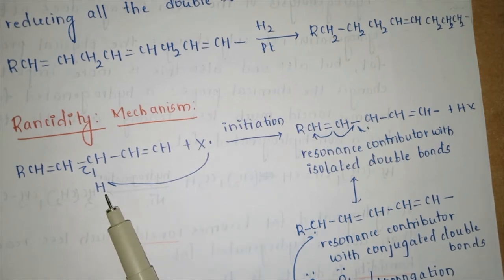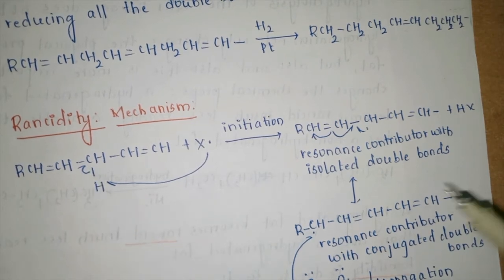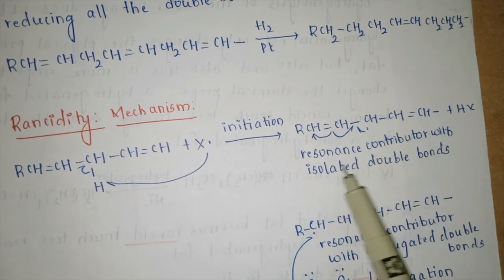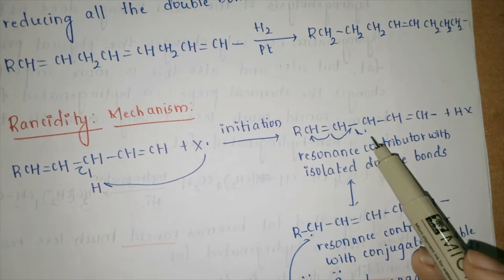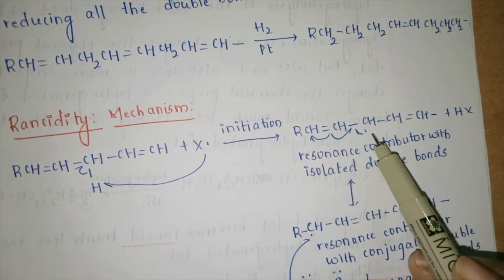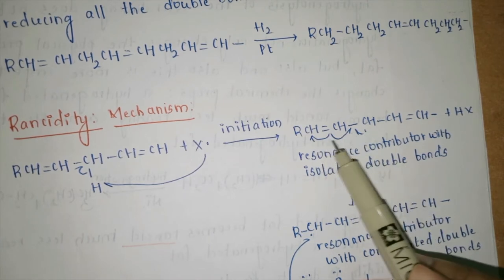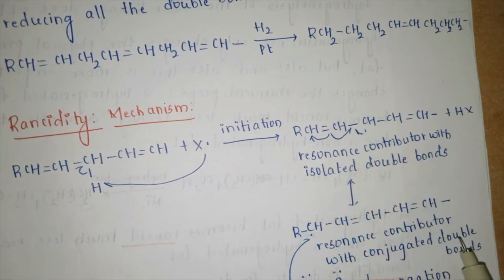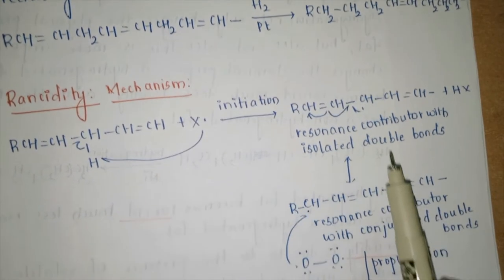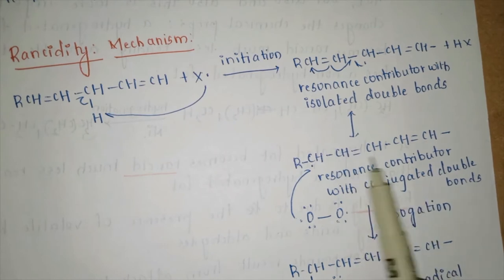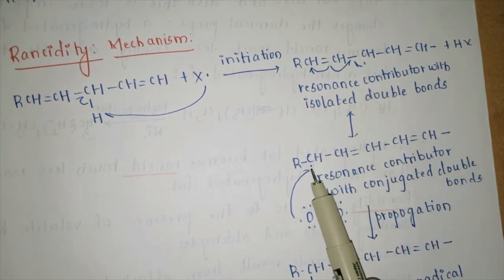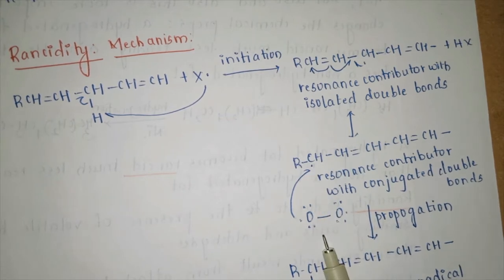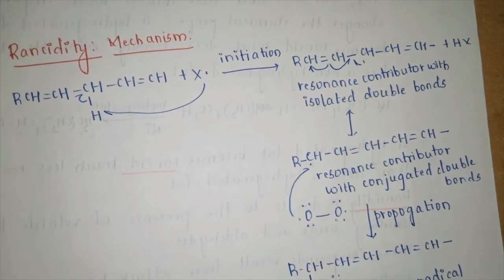When the radical abstracts the methylene proton, HX is eliminated and a new radical is introduced at that position in the long chain. This radical has resonance contributors with the isolated double bonds. The isolated double bonds, through resonance, become conjugated double bonds, and the free radical moves to a terminal position. Once at the terminal position, atmospheric oxygen attacks the radical, giving a peroxy radical.